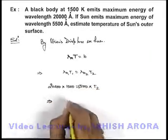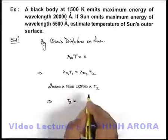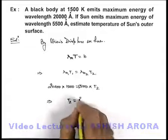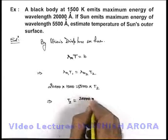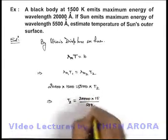Then simply on simplifying this expression, we'll get T2 is equal to 20000 multiplied by 15 divided by 55.